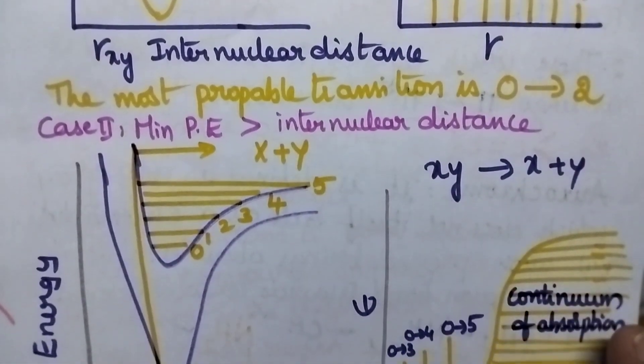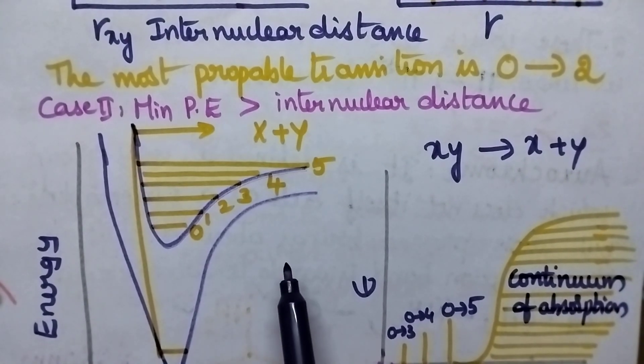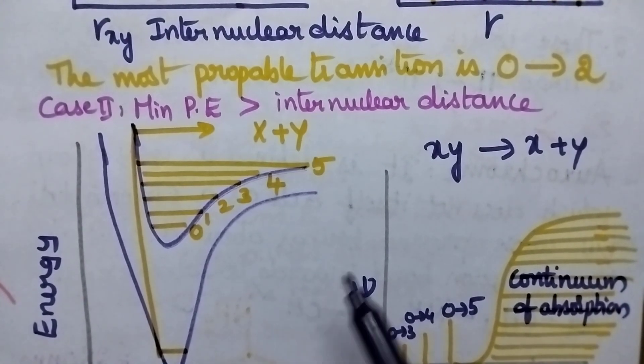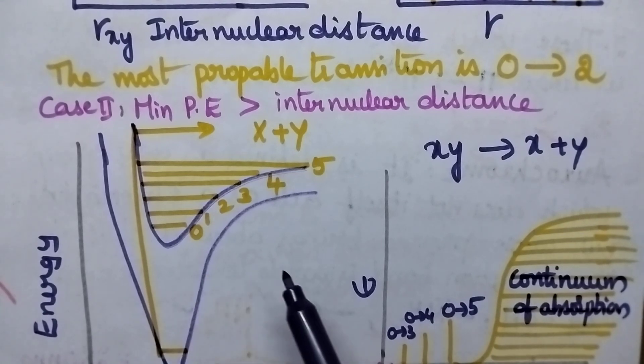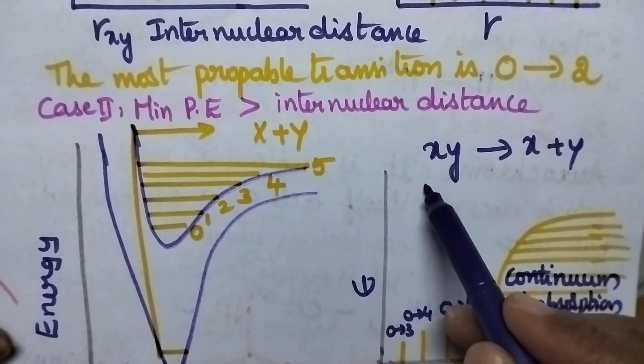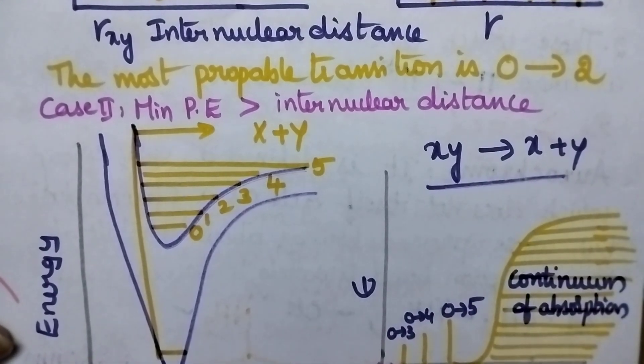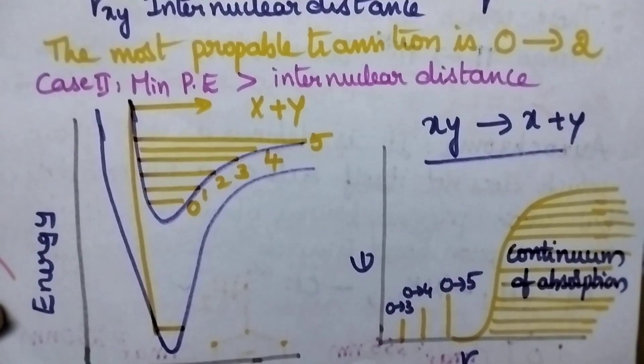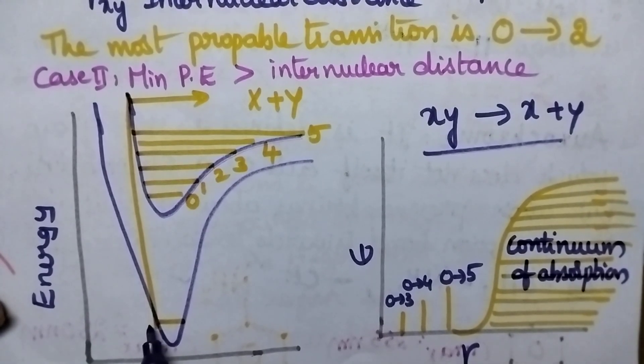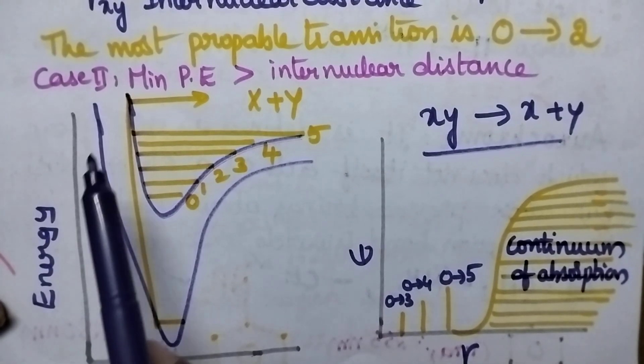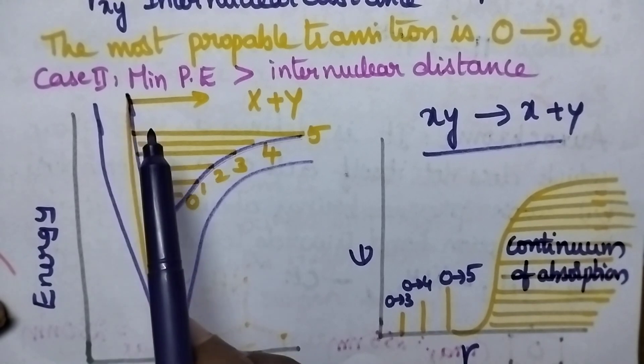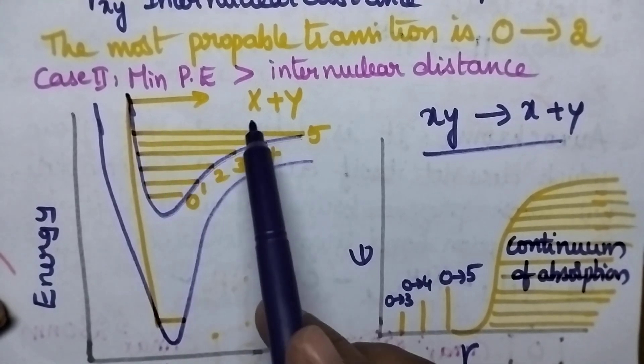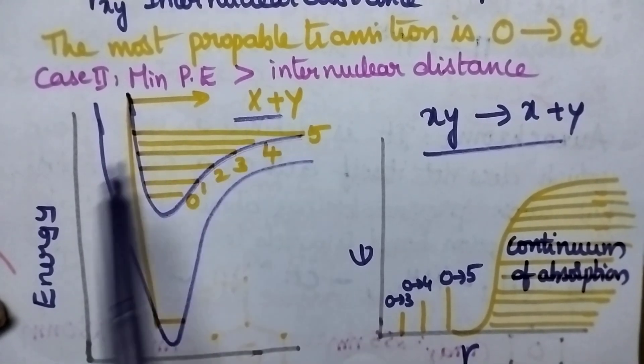In case 2, if the radiation has greater energy, the electrons are not only excited to higher levels but molecular cleavage occurs. As shown in the graph, the electron is excited to energy levels beyond the limit, resulting in cleavage of the molecule.